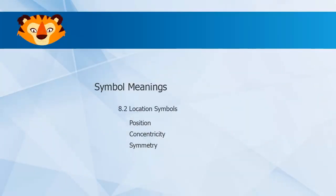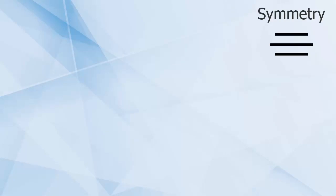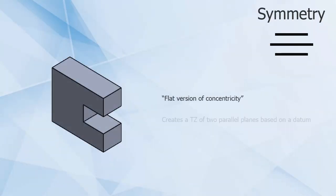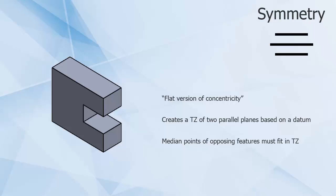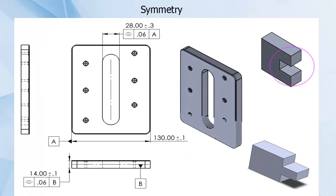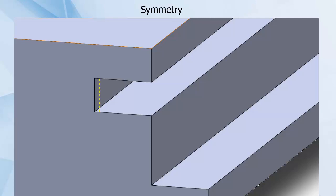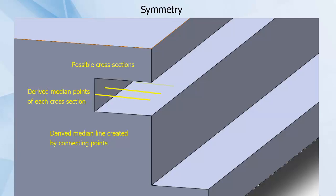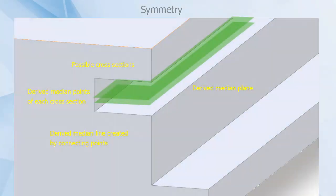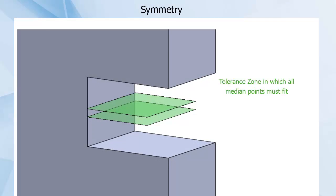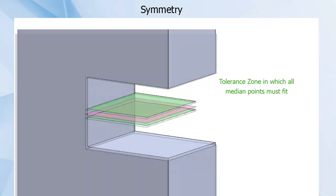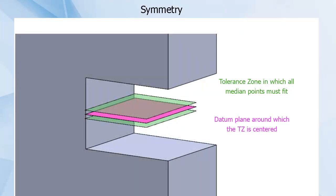The final control in the location category is symmetry. Symmetry is essentially the flat version of concentricity and establishes a tolerance zone composed of two parallel planes in which the median datum points of non-cylindrical opposing features must fall. This measurement can be done for slots and cutouts as well as tabs or parallel surfaces. The tolerance zone looks similar to flatness since it is between two parallel planes; however, the key difference is that symmetry is in relation to a datum plane.